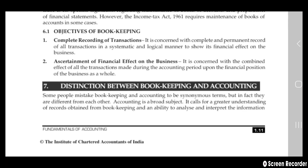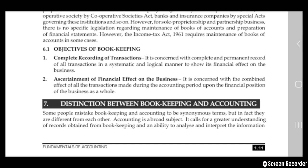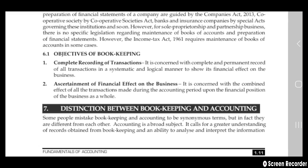The main object of bookkeeping is complete recording of transactions. It is concerned with complete and permanent recording of all transactions in a systematic and logical manner to show the financial effect on the business. There should be a logic — why you have given or taken that money. Ascertainment of the financial effect is concerned with the combined effect of all transactions made during the accounting period and the financial position of the business as a whole.